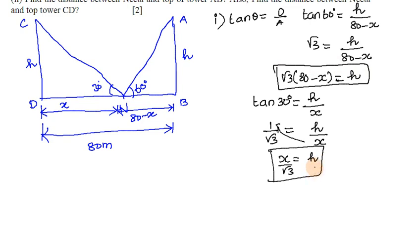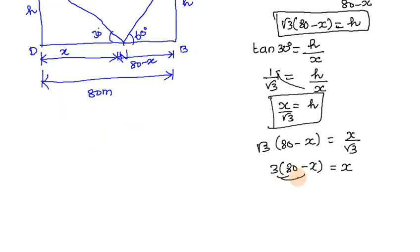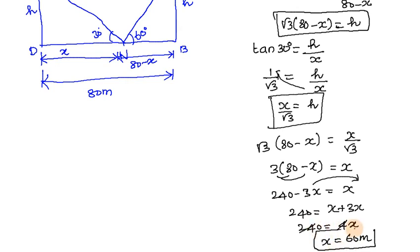√3 times √3 is 3. 3 times (80 - x) equals x. Multiply: 240 - 3x equals x. So 240 equals x + 3x, which is 240 equals 4x. Therefore x equals 60 meters. One base is 60 meters distance.